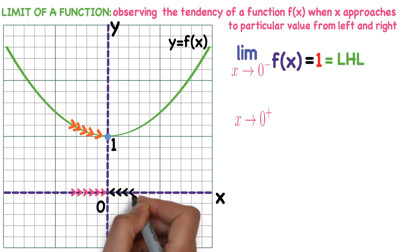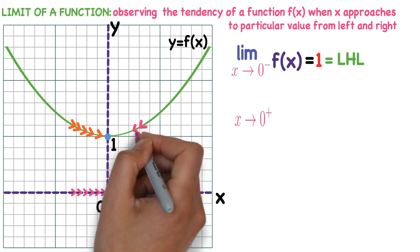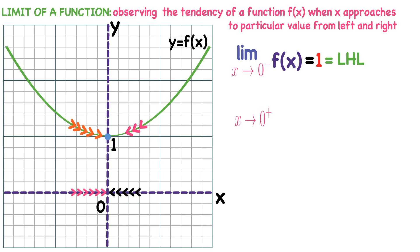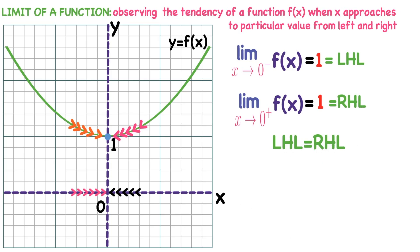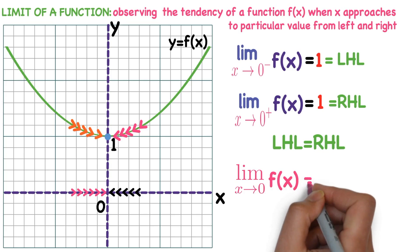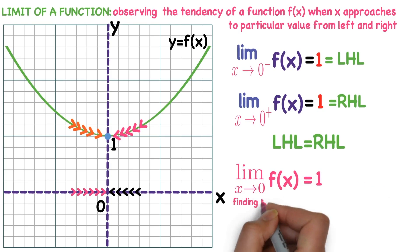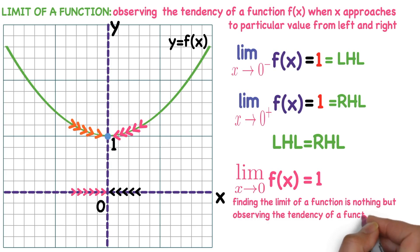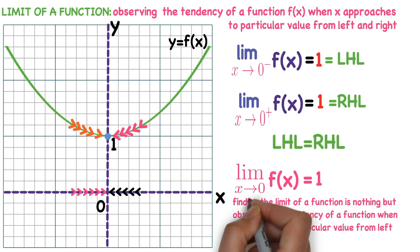Now observe x approaching 0 from right. When x approaches 0 from right, f(x) approaches 1. So the right hand limit of this function is also 1. Left hand limit is the same as right hand limit. When x approaches a particular value from left and right, f(x) also approaches a particular value from both sides — this is how the concept of limit of a function is developed. Since LHL equals RHL, we say limit as x tends to 0 of f(x) equals 1.